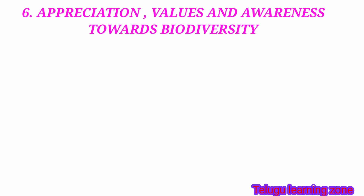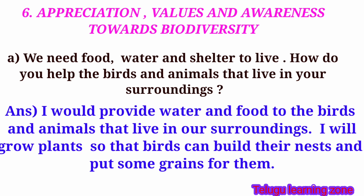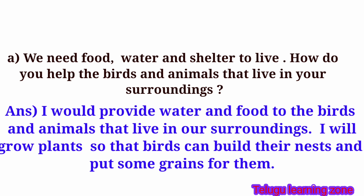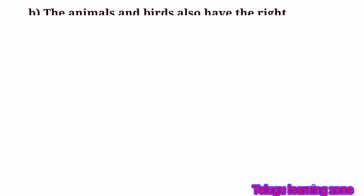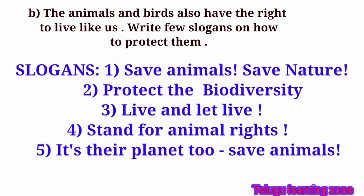Appreciation, values and awareness towards biodiversity. Question A: We need food, water and shelter to live. How do you help the birds and animals that live in your surroundings? Answer: I would provide water and food to the birds and animals that live in our surroundings. I will grow plants so that birds can build their nests and put some grains for them. Question B: The animals and birds also have the right to live like us. Write few slogans on how to protect them. Slogans: Save animals, save nature. Protect the biodiversity. Live and let live. Stand for animal rights. It's their planet too. Save animals.